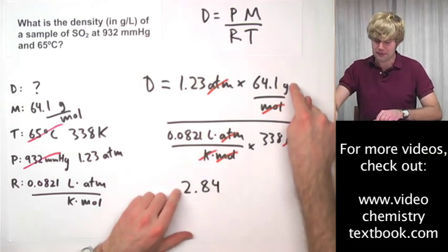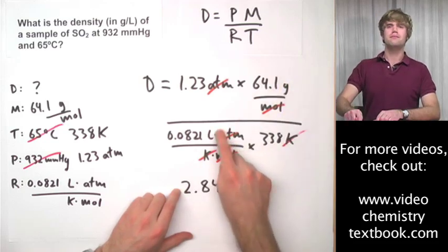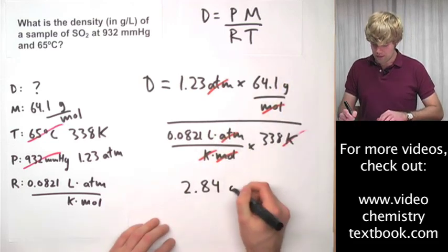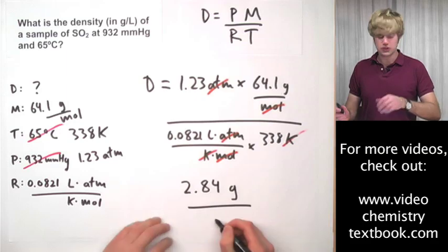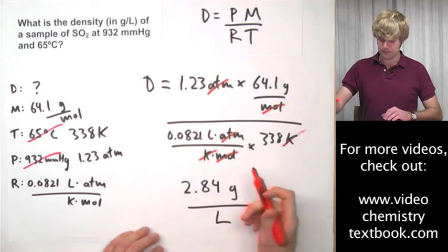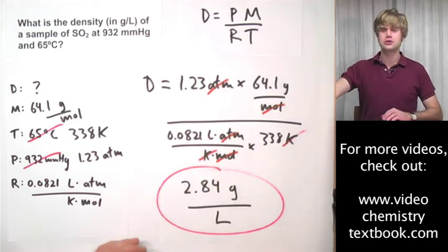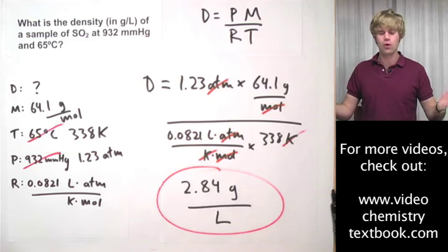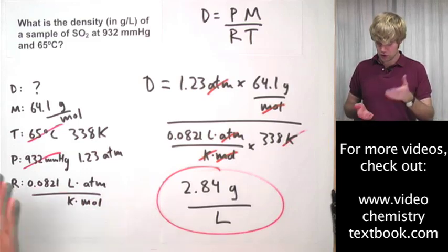Well, I have grams on top of the fraction and I have liters on the bottom of the fraction. So my final units are going to be grams per liter, which makes perfect sense because that's how we report density as grams per liter.